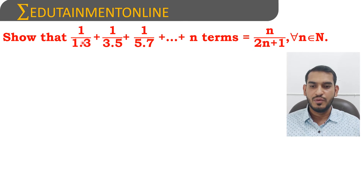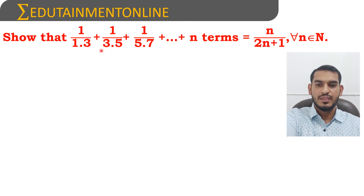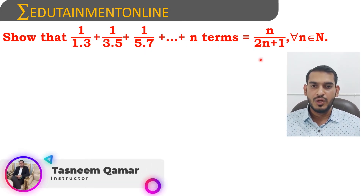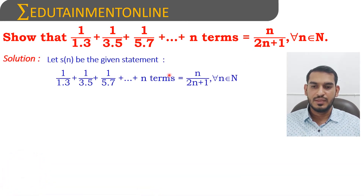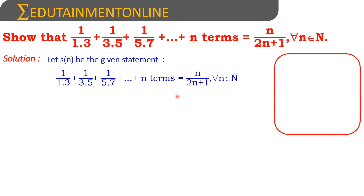Show that 1/(1×3) + 1/(3×5) + 1/(5×7) and so on up to nth terms is equal to n/(2n+1).